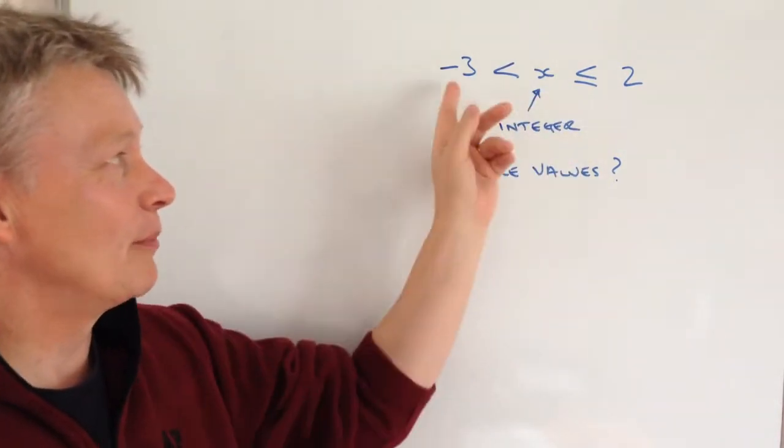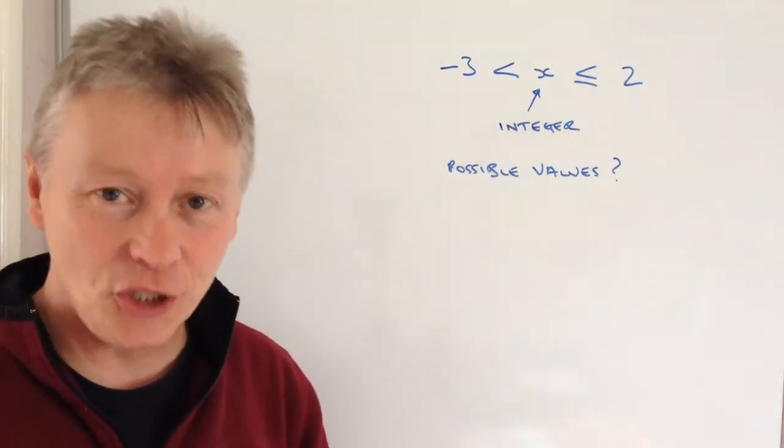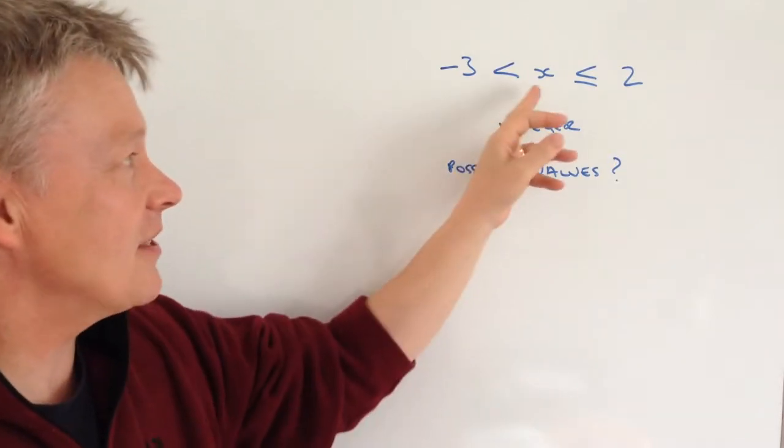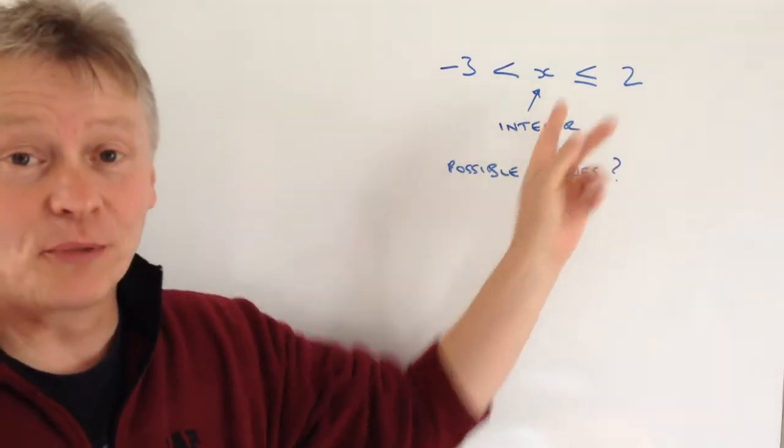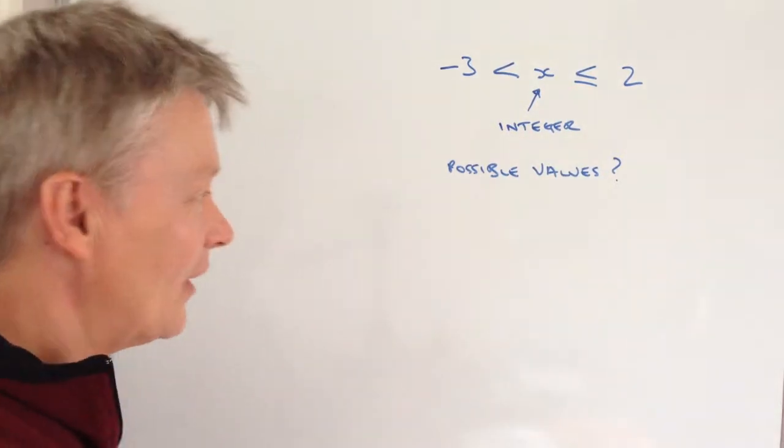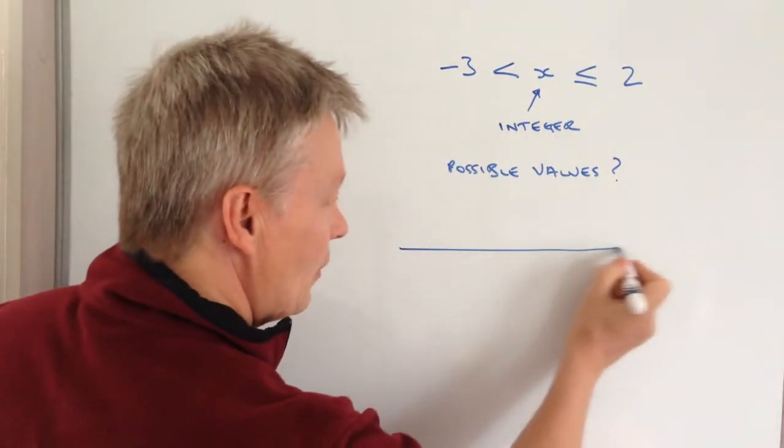So x is a whole number between -3 and 2. What we're saying is that x is greater than -3 and less than or equal to 2. If I put that onto a number line, I can draw this inequality.